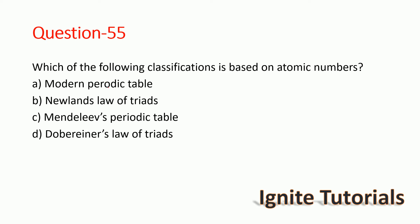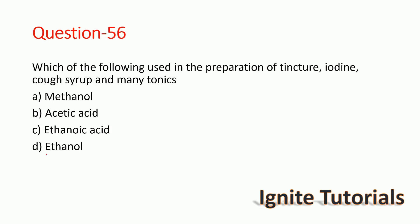Question 55: Which of the following classifications is based on atomic number? The options are the modern periodic table, Newlands' Law of Octaves, and Mendeleev's periodic table. The correct answer is the modern periodic table — option A is correct.